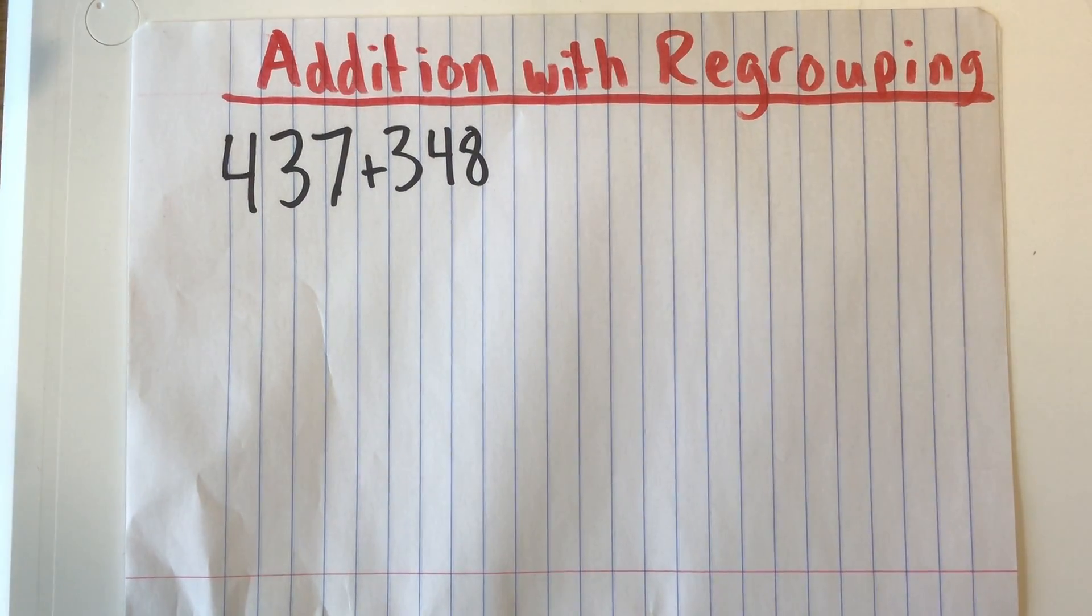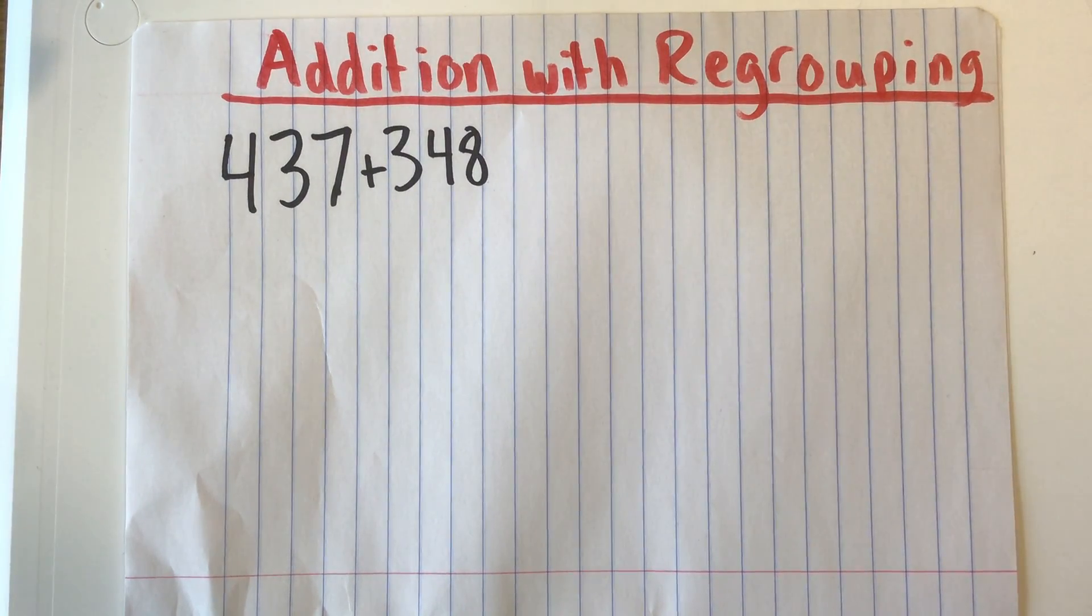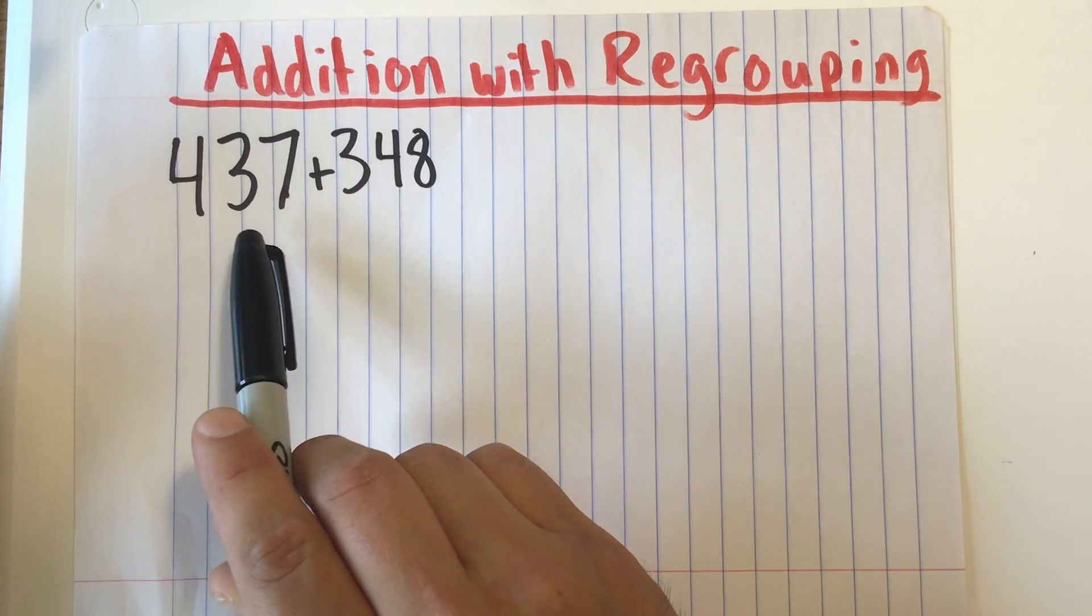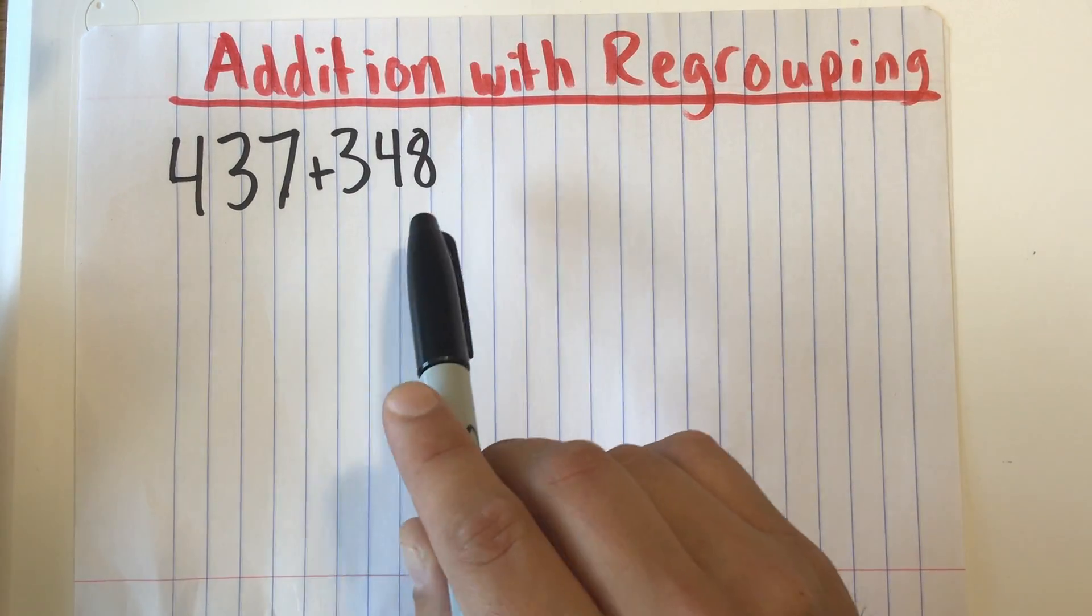Hello second graders, today we're going to be doing a little bit of addition with regrouping this time. You can't see the G over there so I'll move my paper over a little bit. So we have our problem here, it's 437 plus 348.